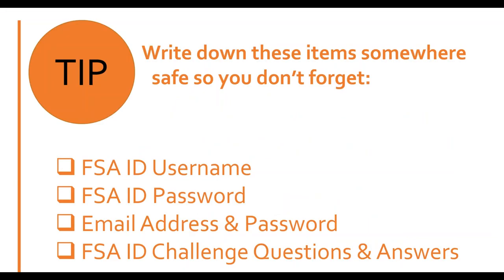Next they'll enter a mailing address and optionally a mobile phone number, which is recommended to help recover their account if locked out. Then they'll complete different challenge questions, which can take some time for some students. Once they review that all information is correct, they agree to the terms and conditions and are done creating their FSA ID. They will have created an FSA ID username, password, possibly a new email address, and challenge questions. Make sure they write all of this down somewhere safe — maybe write it down, take a photo, or email it to themselves.